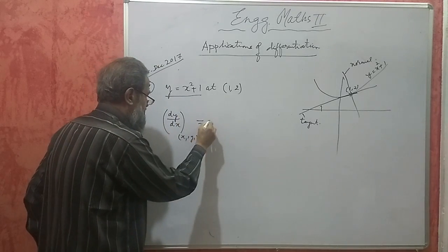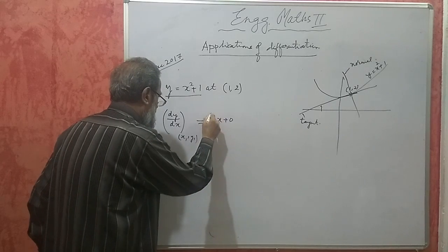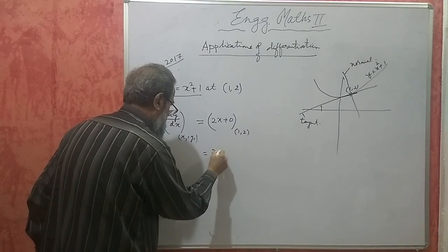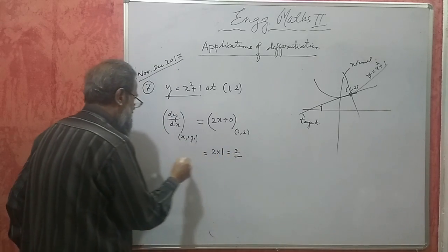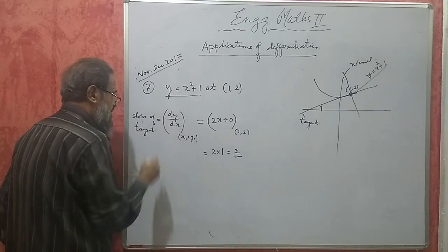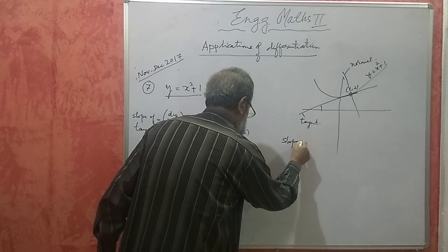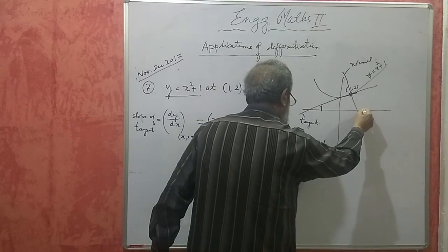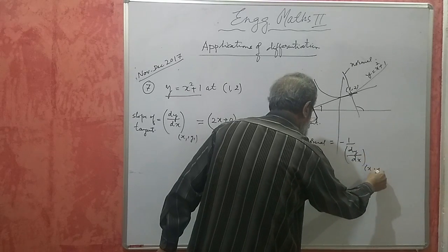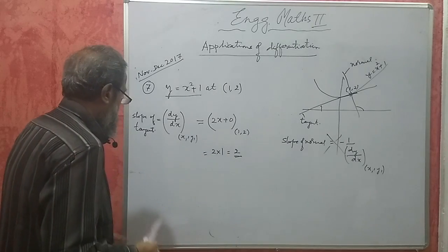The dy/dx of y = x² + 1 will be 2x + 0. Differentiation of x² is 2x, 1 is a constant so it is 0. At the point (1, 2), only x is there, so 2 × 1 = 2. This is the slope of the tangent. If asked for the normal, slope of normal would be −1 divided by dy/dx at (x1, y1). But here we need the tangent, so slope m = 2.